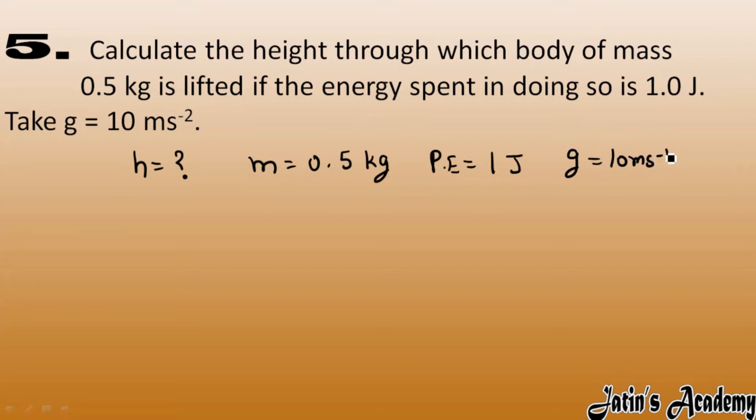Now we have to calculate the height. The potential energy formula we have is mgh. Potential energy value is 1 joule, mass value is 0.5 kg, g value is 10, and height value we have to calculate.